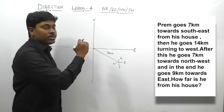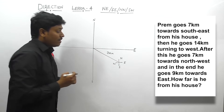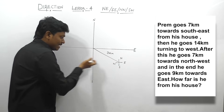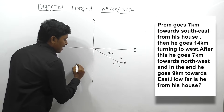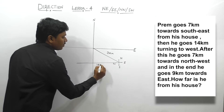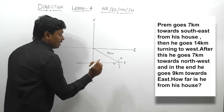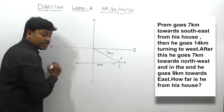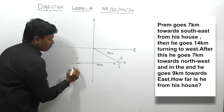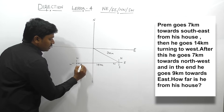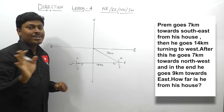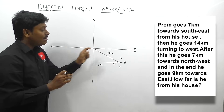And then he goes 14 km towards west. From this point, the person is covering 14 km towards west, so this is 14 km. After reaching this point, you should draw a small direction like this — north, south, west and east. If you follow this method, however difficult the question is, don't worry — you can surely crack it.